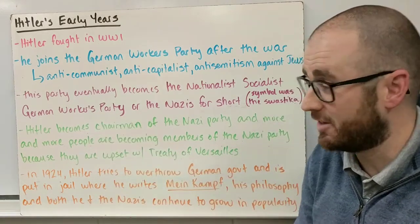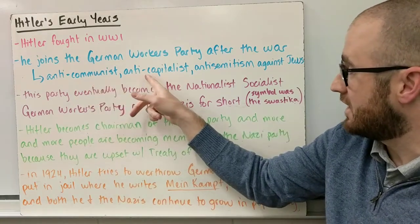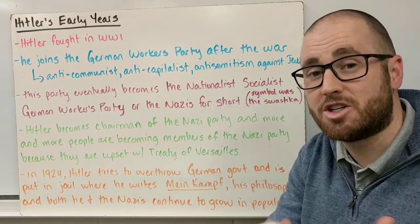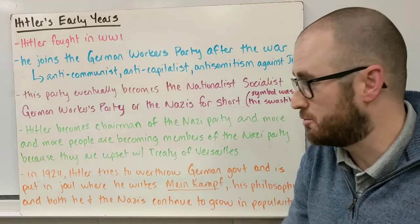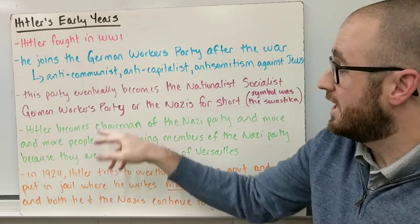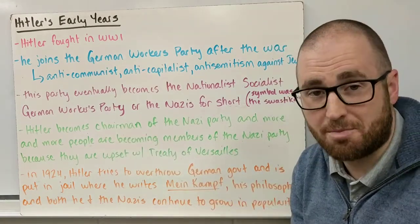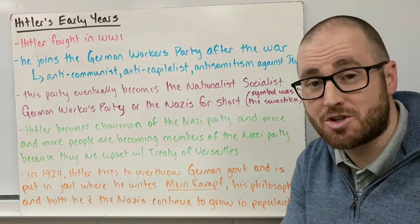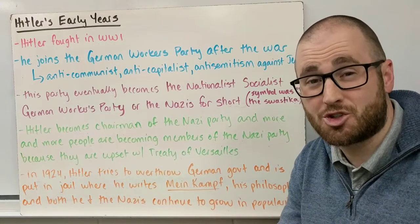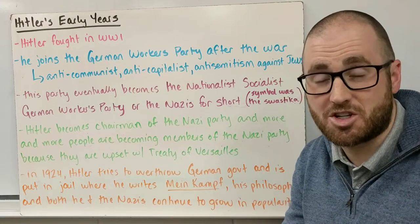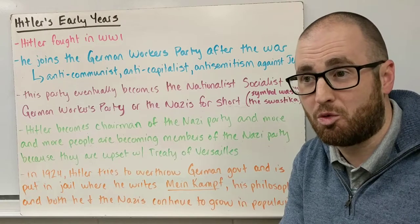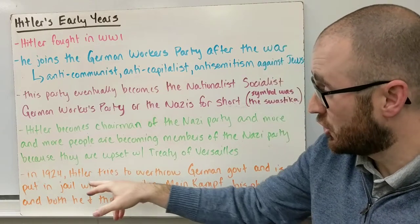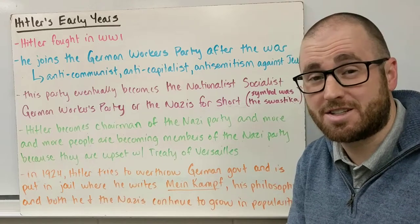The Nazi Party's symbol becomes the swastika — so that is the birth of the Nazi Party, which was still very anti-communist, anti-capitalist, and anti-semitic, particularly targeting Jewish people. Hitler becomes the chairman of the Nazi Party, and more people are becoming members because they're growing upset with Germany's situation after World War I and the Treaty of Versailles.